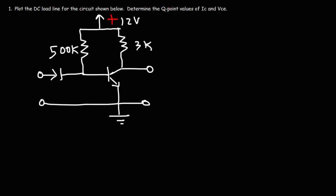In this video, we're going to talk about how to plot the DC load line for a circuit in base bias configuration, and also how to determine the Q-point values of IC and VCE.